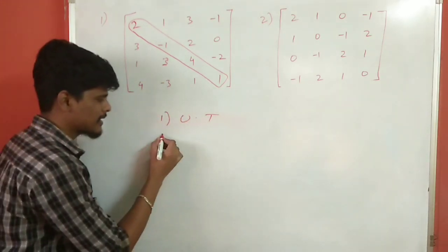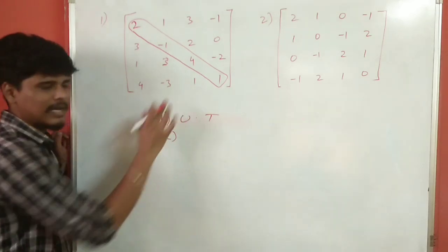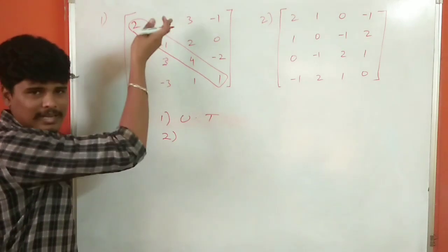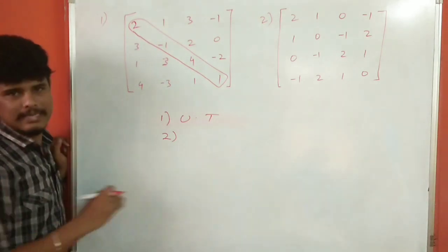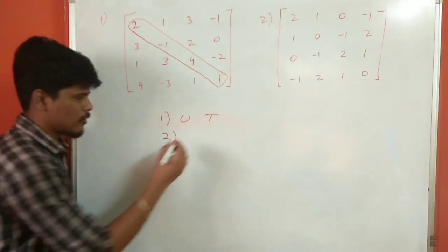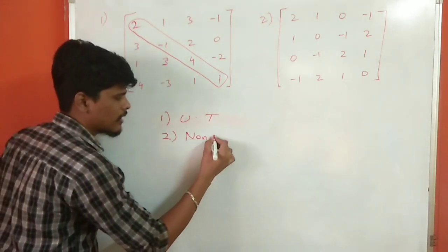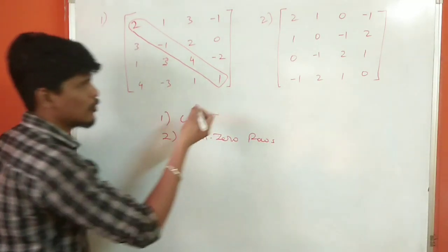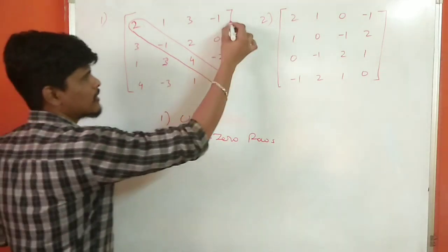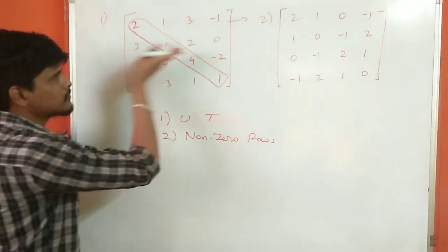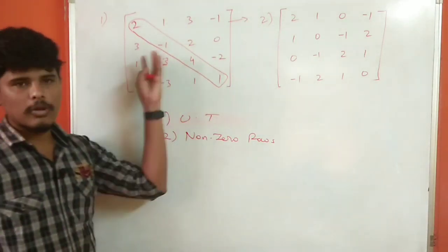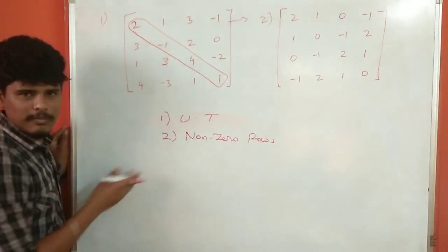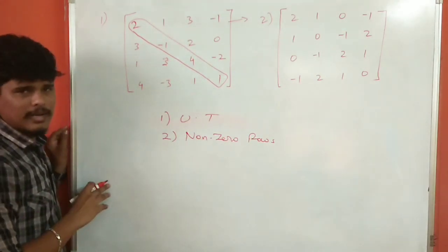This is the first step. The second step: once you convert to the upper triangle matrix, let's see how many non-zero rows there are. Count how many rows are non-zero rows. This is very important.